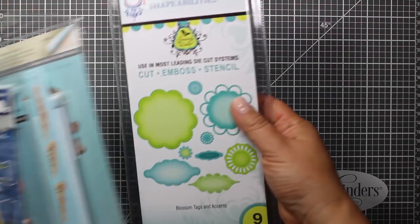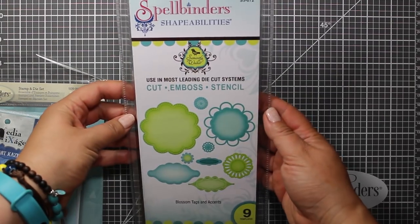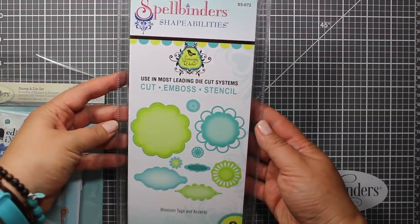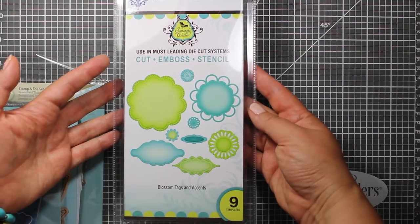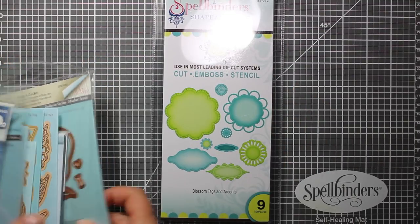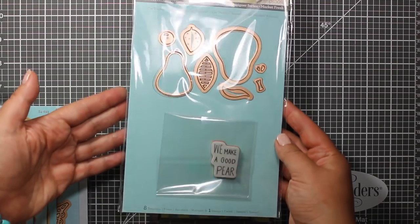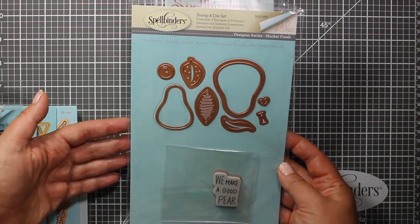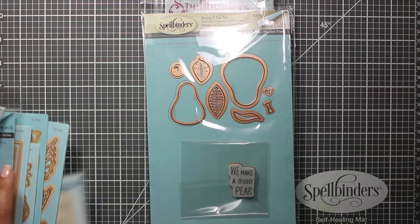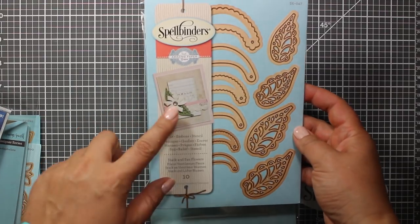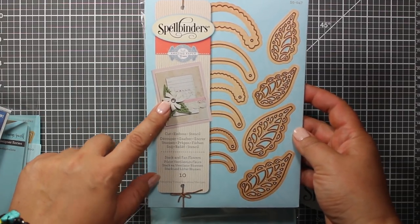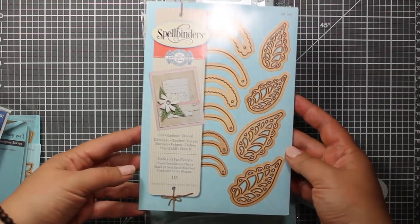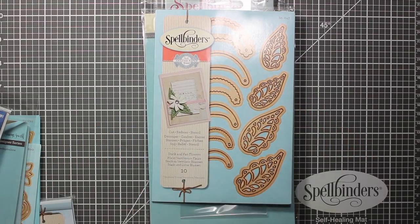So here are the products that are included. I'll start with the dies. This set is Blossom Tags and Accents. The next one is called Perfect and this one also includes a sentiment stamp. The next set is Stack and Fan Flowers. Here you can see how it actually looks like on a project. That's very convenient.